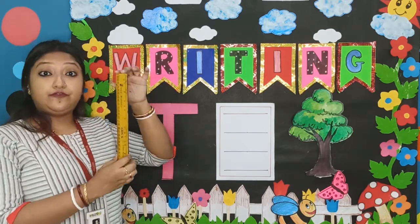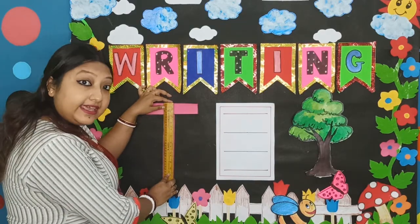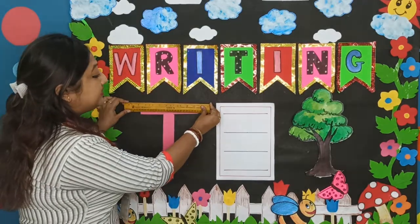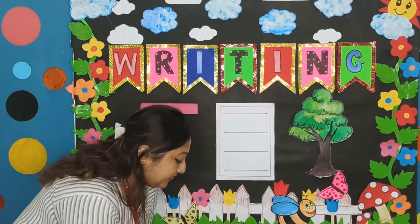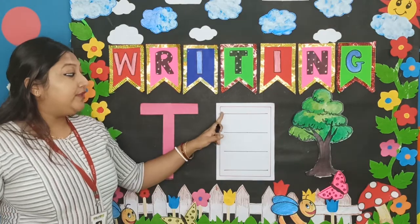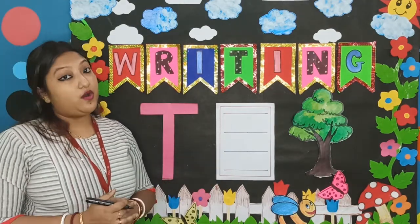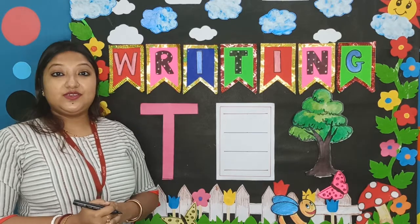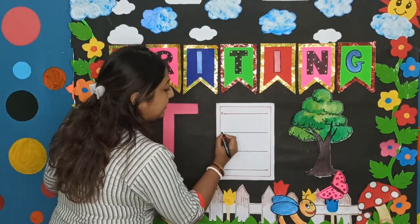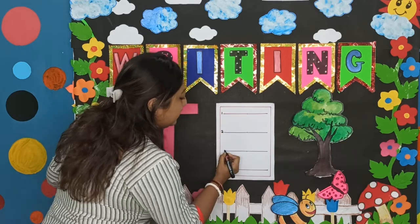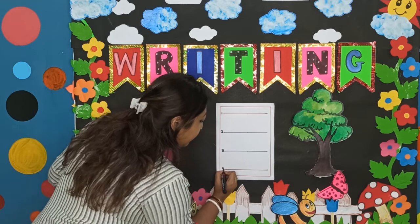For writing T, first we will have to draw a standing line like this, and then we will draw the sleeping line. So we will mark these lines. You can see these lines on your English copy. This is line number 1, this is line number 2, this is line number 3, and this is line number 4.